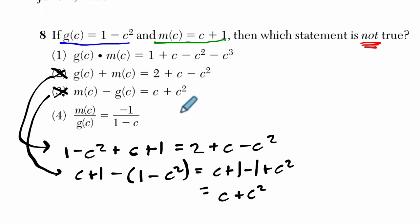Now, for this one, m of c over g of c, let's write that out. It's c plus 1 over g of c, which is 1 minus c squared. Now, 1 minus c squared, that's the difference of two squares. It's going to factor to what? 1 minus c and 1 plus c. Remember, difference of squares: 1 is a square, c is a square, and it's called a difference because we're subtracting. It always factors to the square root of the first term minus the square root of the second term, so the square root of 1 is 1, c squared is c, and then the square root's added. So the square root's subtracted, 1 minus c, and the square root's added, 1 plus c.